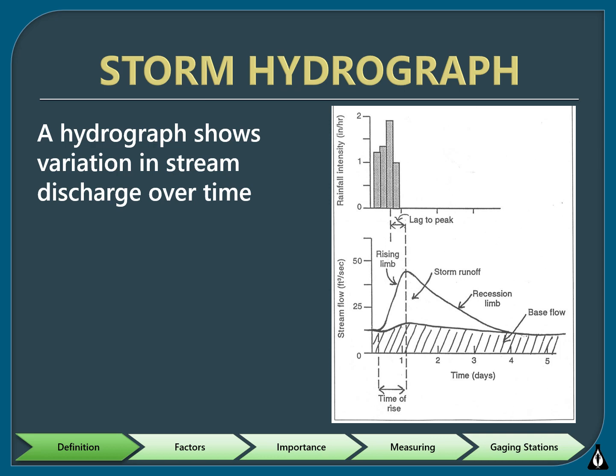A hydrograph is a visualization of stream discharge, showing the variation over time. The top graph in this image shows the intensity of the rainfall, and the bottom graph is a hydrograph for the same time period, showing the stream's response to precipitation. In the hydrograph, the x-axis is time in days and the y-axis is discharge in CFS. Shortly after the peak in rainfall intensity, there is a lag to peak in stream discharge. After this peak, stream flow tapers off until it reaches base flow, represented by the recession limb.